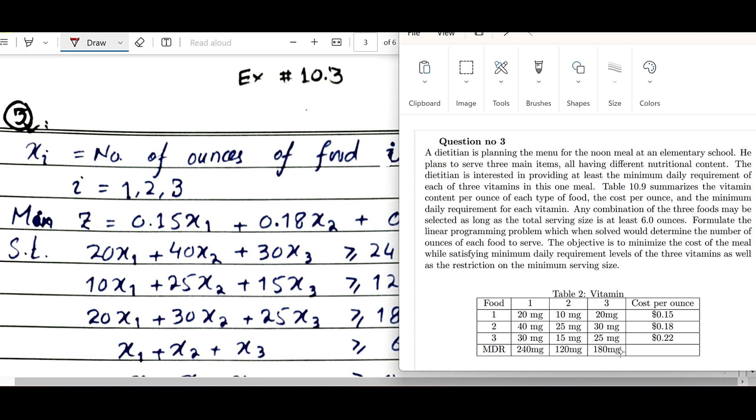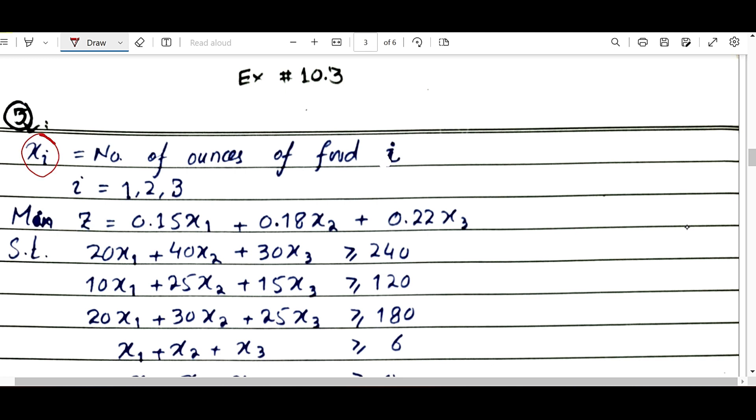The conditions state that any combination of the three foods may be selected as long as the total serving size is at least 6 ounces. So what we need is x1, x2, x3, representing the number of ounces of food one, food two, and food three.